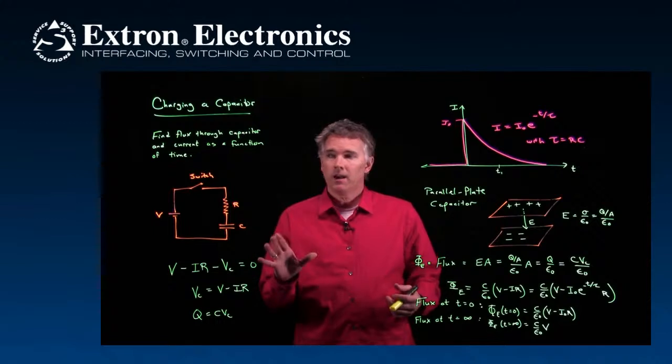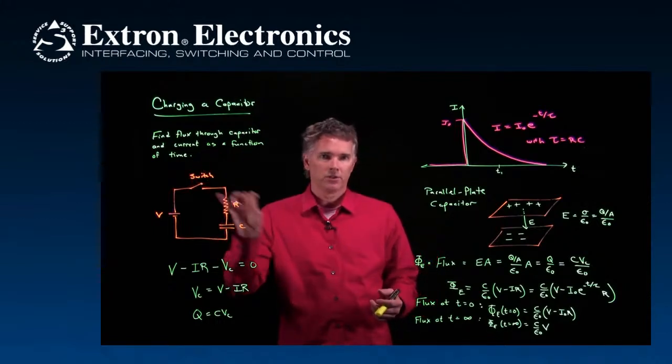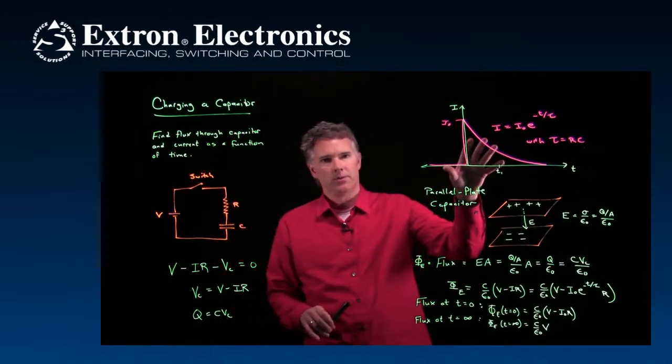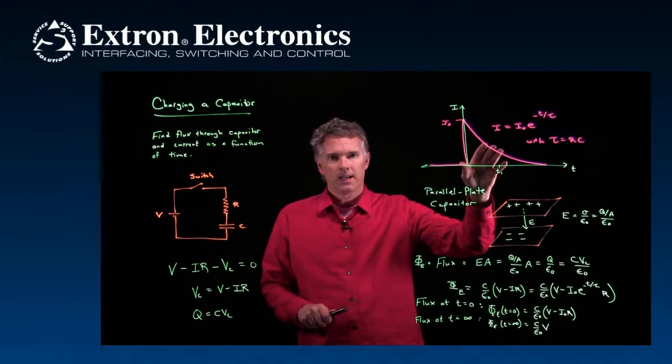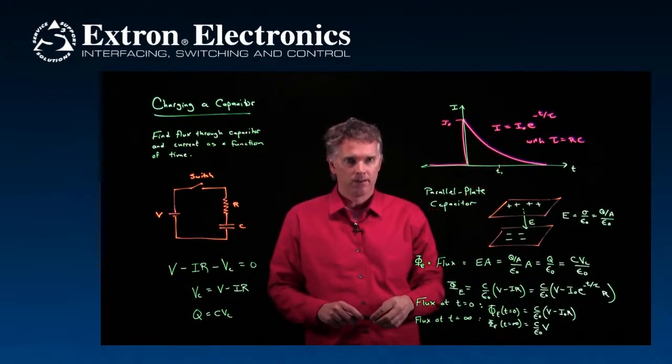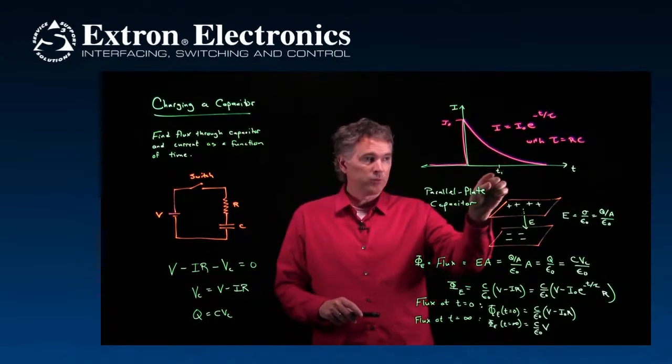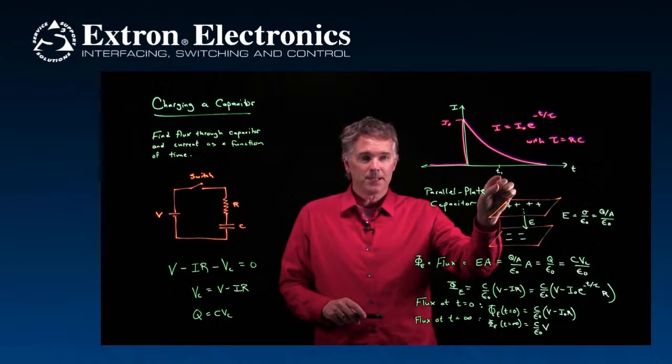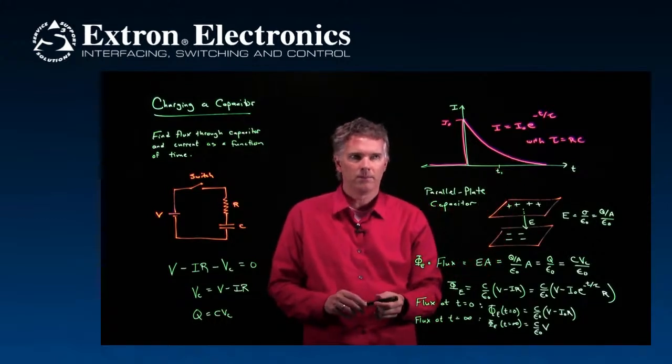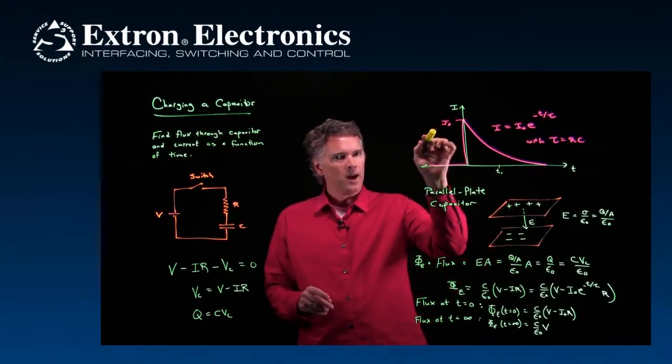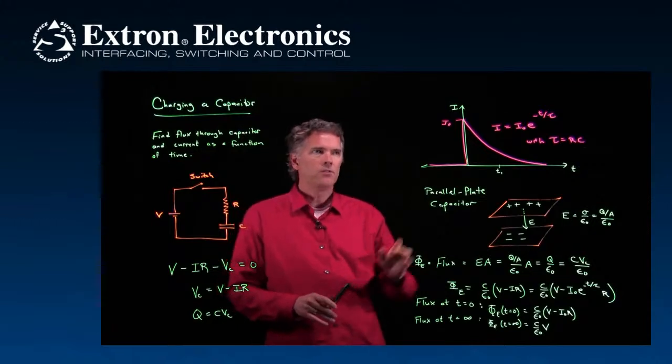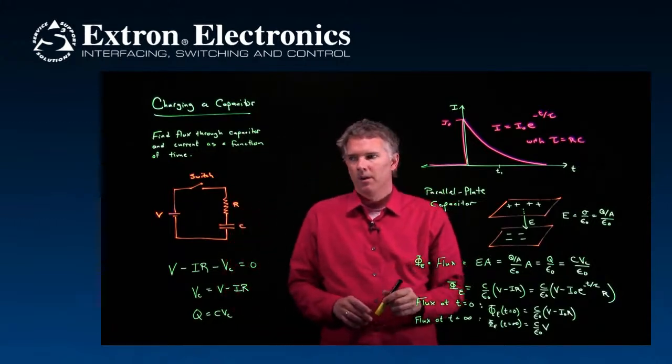Now, if you want to calculate the current as a function of time, we showed you how to do it right here. I is equal to I naught E to the minus T over tau. So if you, for instance, want the current at some time T1, you just have to plug T1 into that equation. But we need to know what I naught is. What is the maximum current?